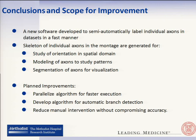I would like to conclude by saying that this is a new software available on our website for anyone to try. The software can be used to label individual axons in the montages, and this information could be used for segmentation, visualization, modeling, or for studying the spatial patterns of these axons. For future versions, we have planned to parallelize the algorithm using techniques like multi-threading to improve execution speed, to develop algorithms for automatic branch detection since the current version identifies branch points manually, and to reduce the manual intervention needed without compromising accuracy.